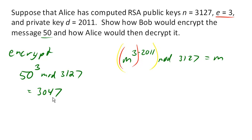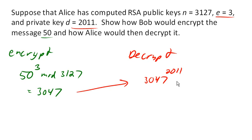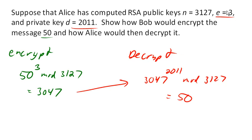So this is the message that Bob then sends to Alice. Alice then can decrypt it by raising this 3047 to the power of her decryption key mod n. Again, she's going to need some calculational help — some technology help — because this is not something we can compute by hand or on a basic calculator without some tricks. And this turns out to be 50. The whole idea here is that e and d are picked so that 50 to the third, to the 2011, gets you back to the original message.